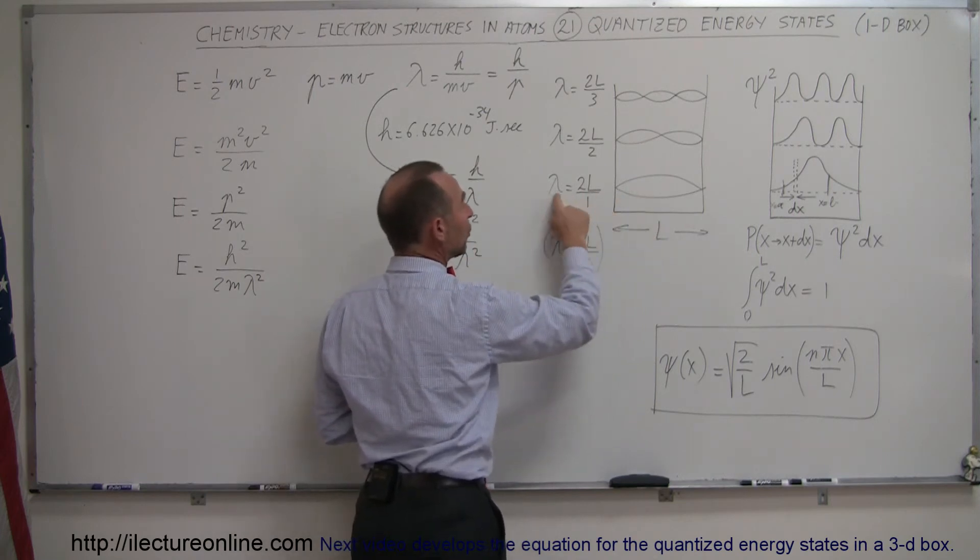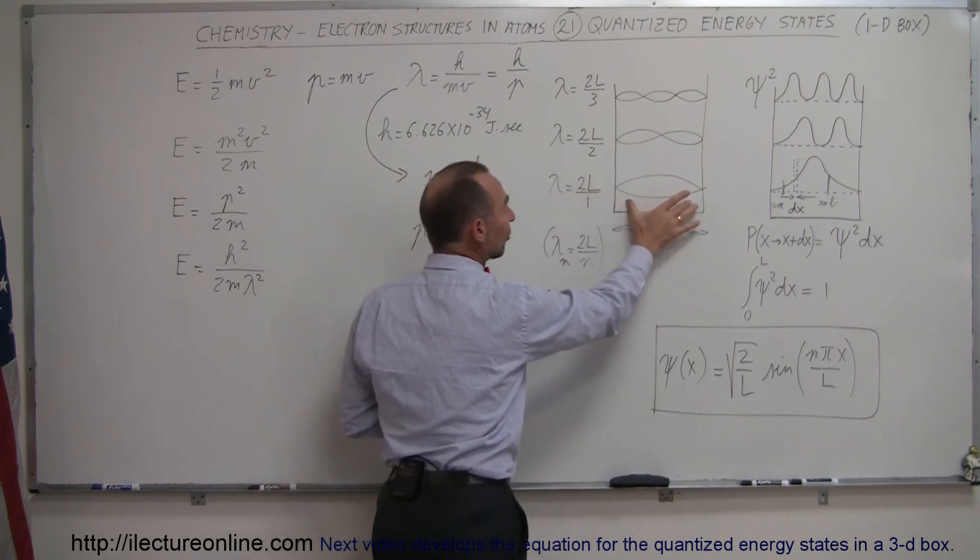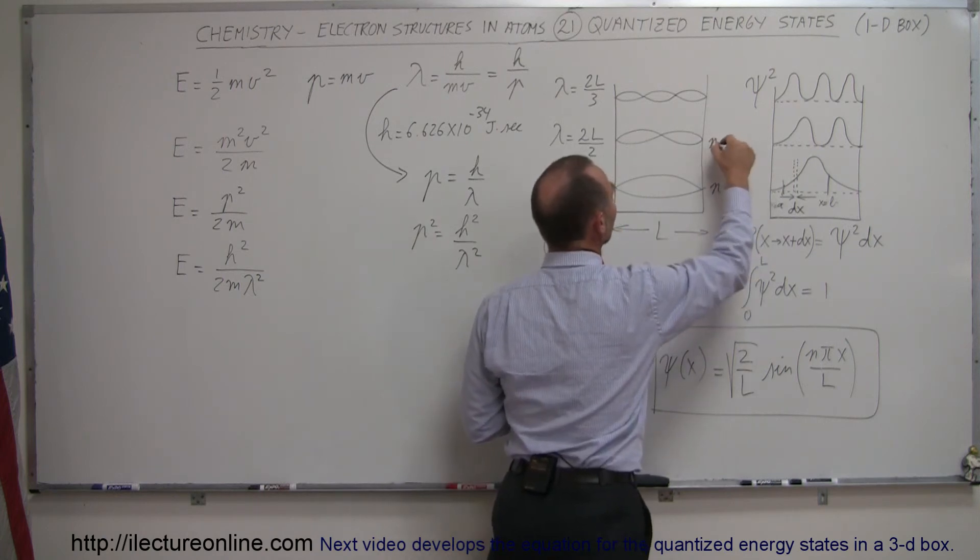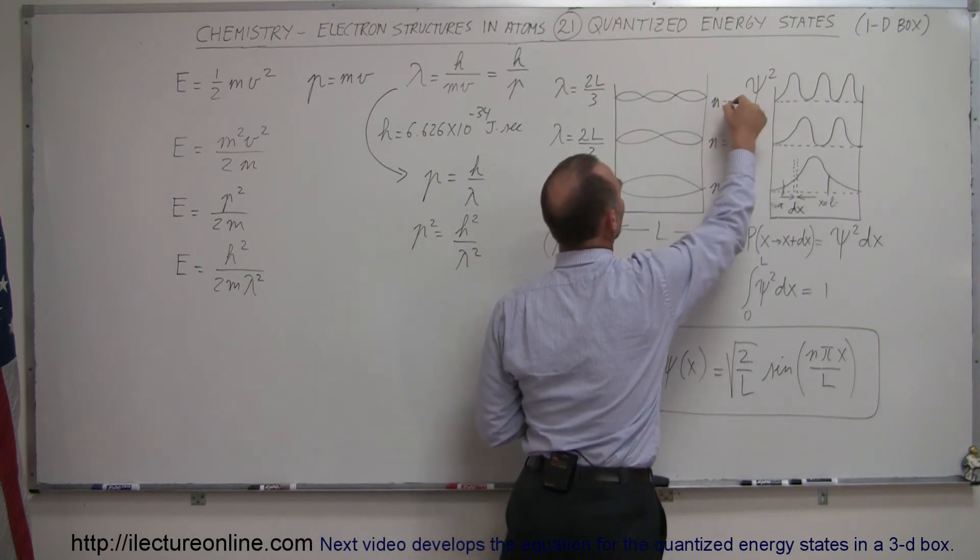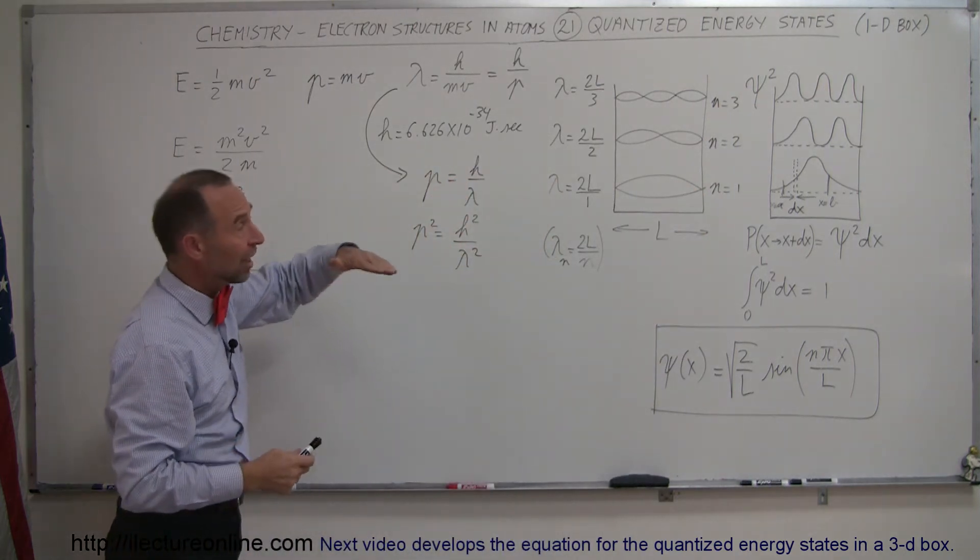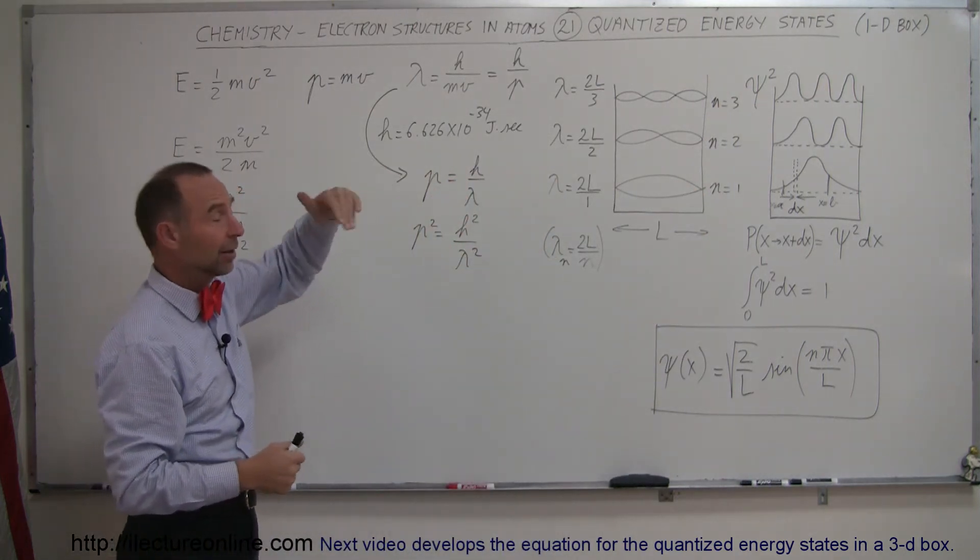So therefore, I realized that the wavelength, in the case of the first energy state, this is the n equals 1 energy state, this is the n equals 2 energy state, the n equals 3 energy state, n just simply defines the different energy states. And as the number gets bigger, it's a higher and higher energy state.